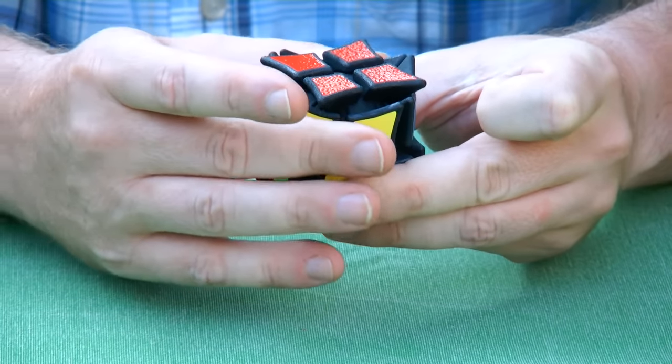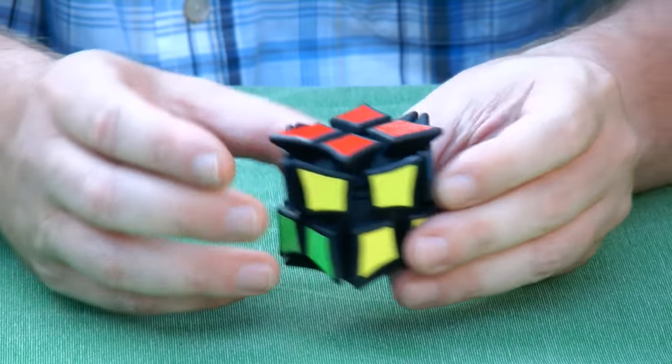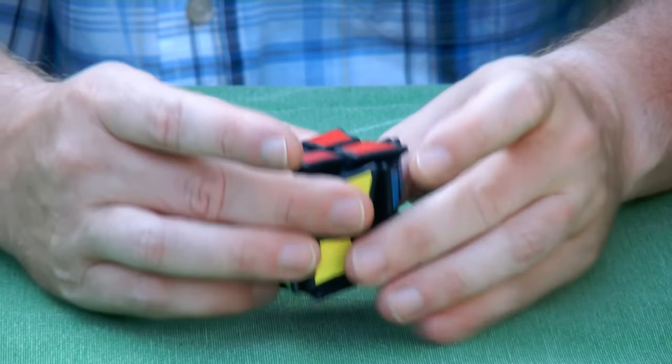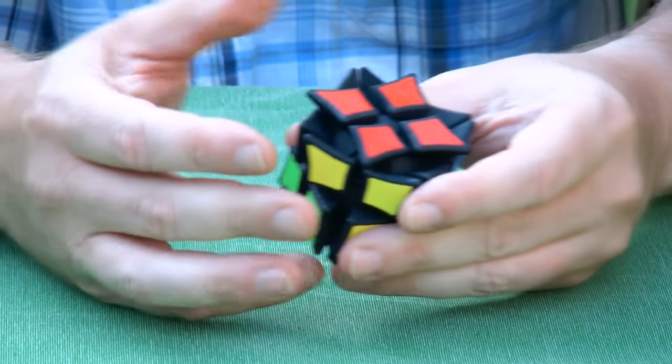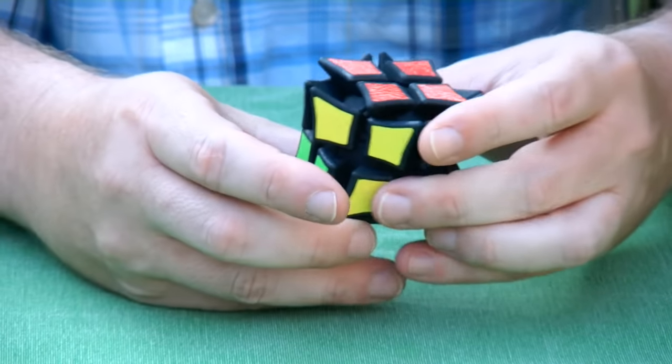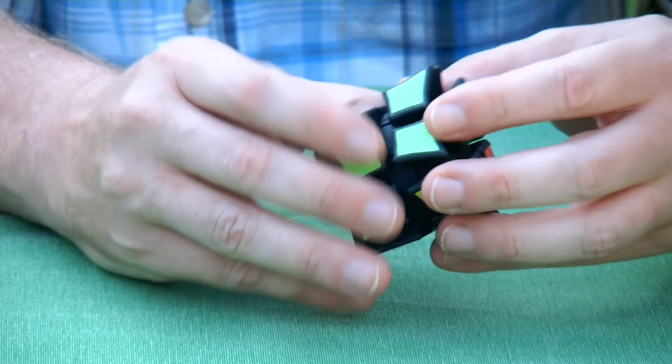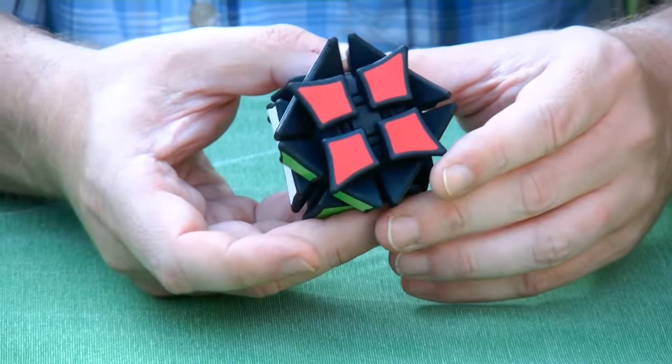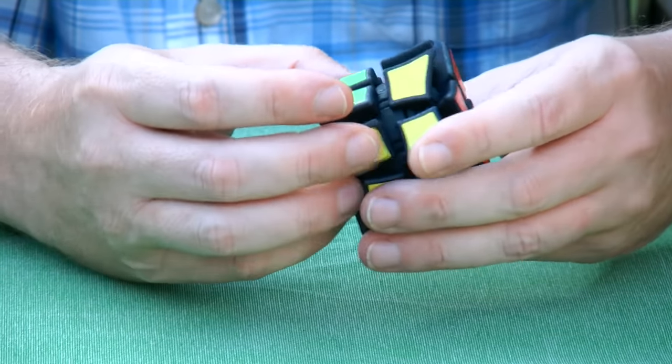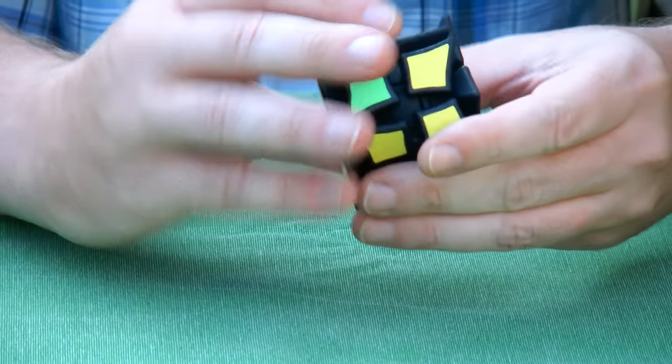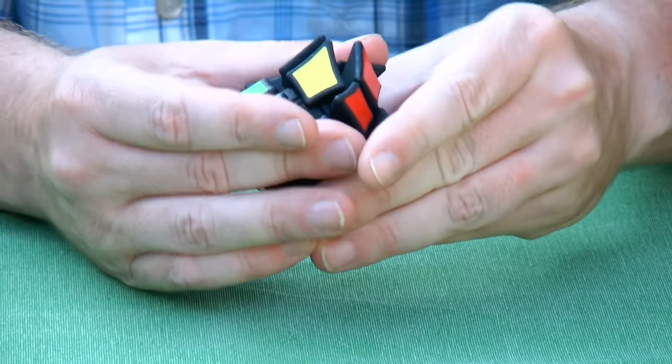But more interesting is that you can do a 45-degree turn. Let me try and align it accurately. Then here we have the top slice turned at 45 degrees. I hope you can see it. And then it's possible to turn in the next direction like this.